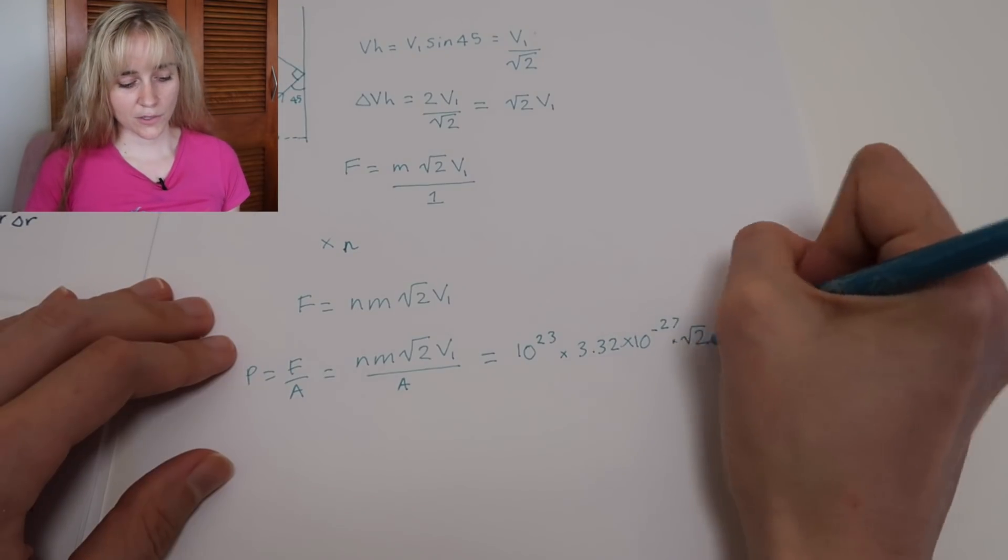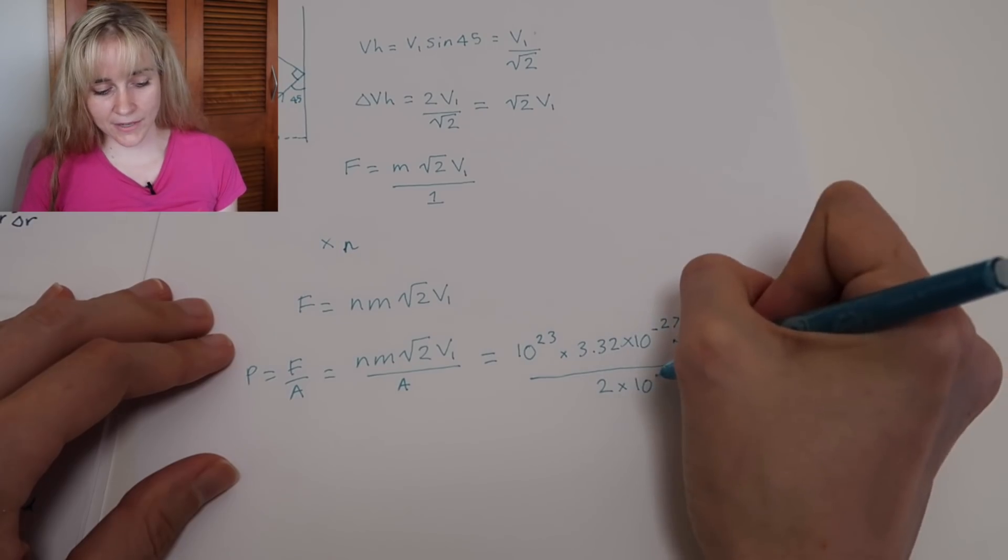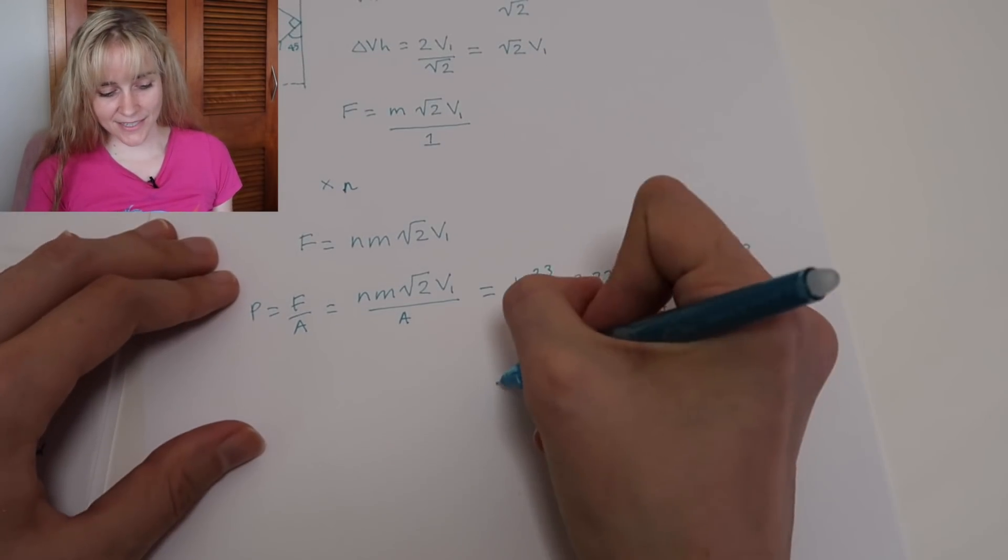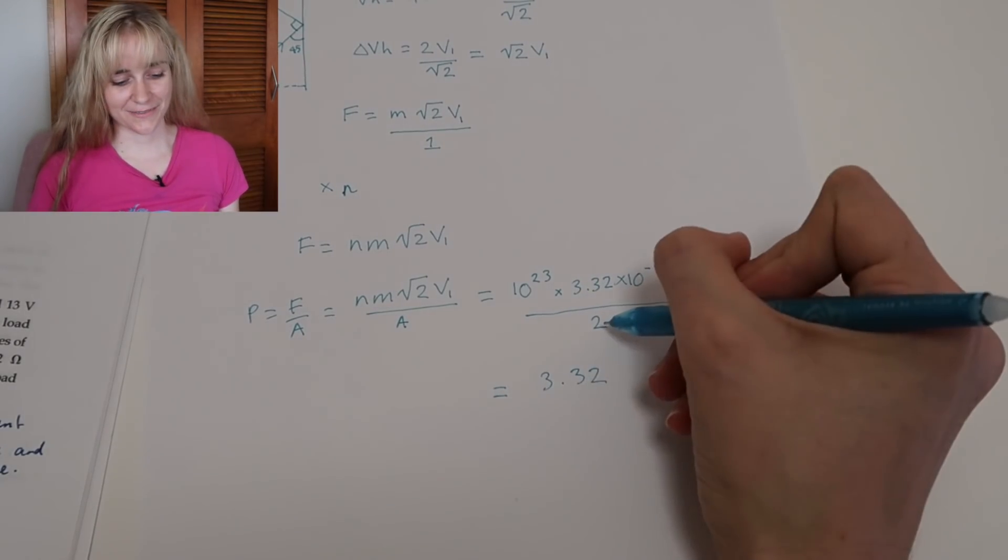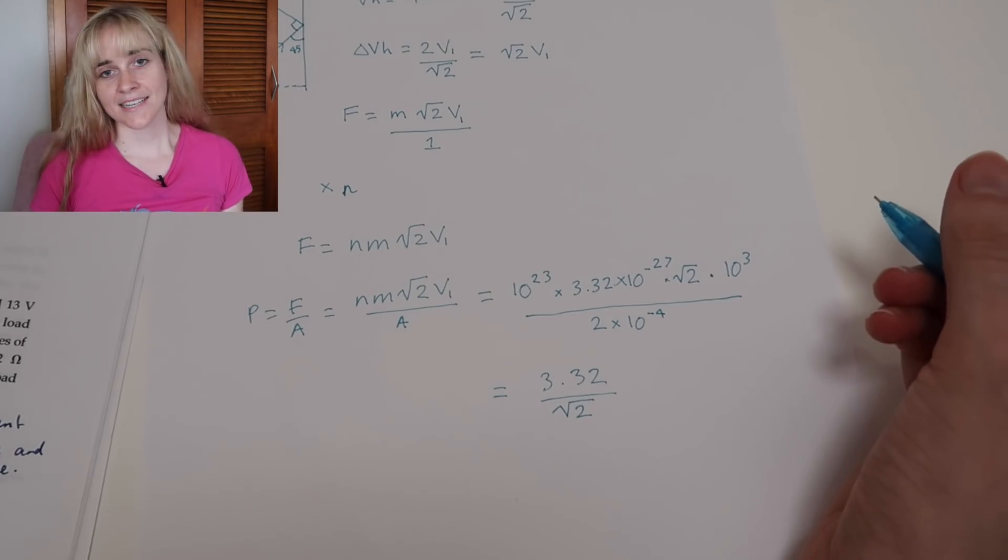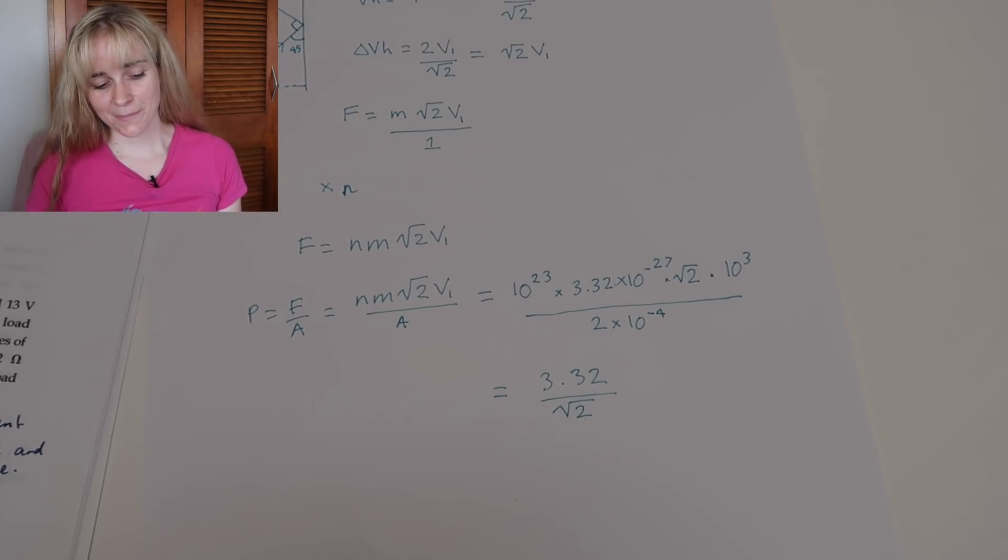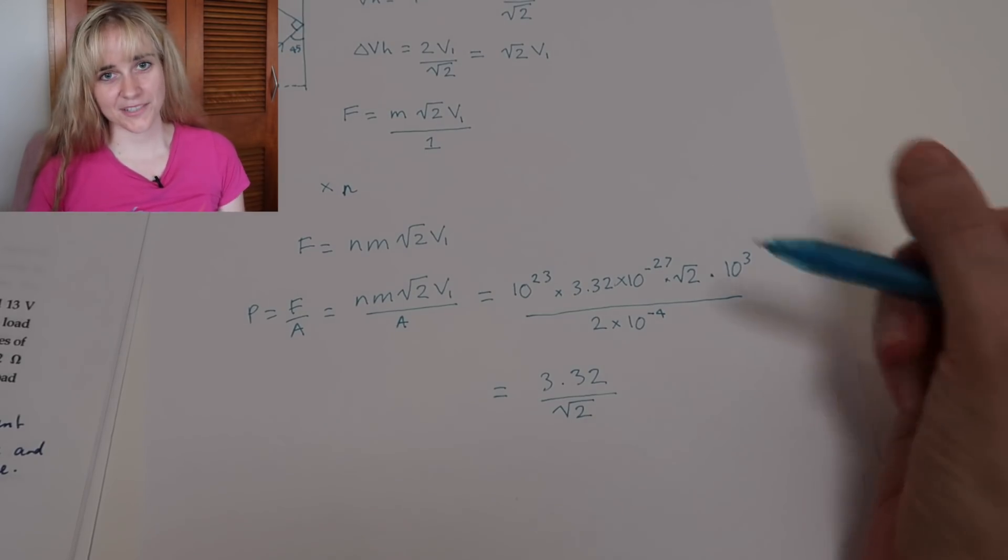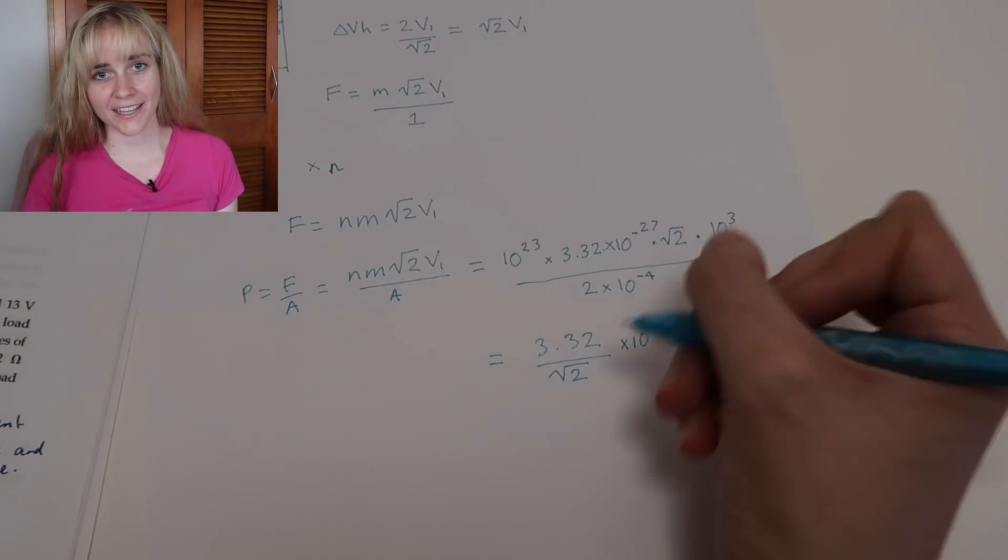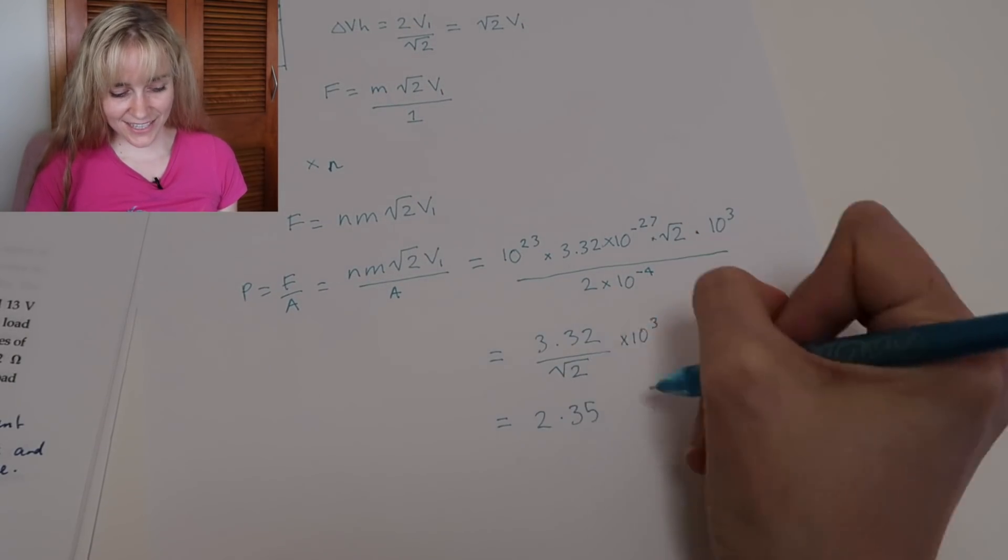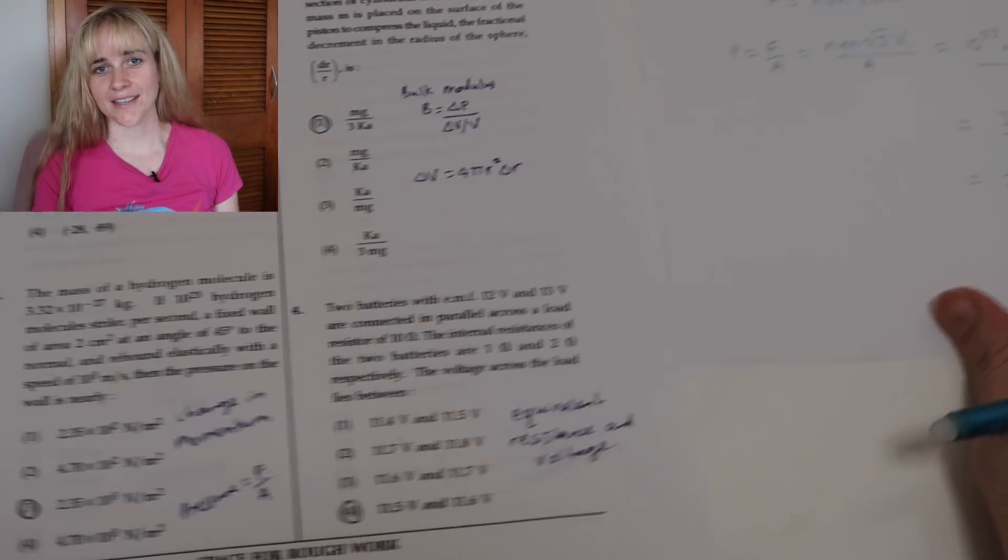Then to find the total pressure on that wall, we want to divide it by our area which was two centimeters squared. So just plug in all of our values here. Most of working this out comes to looking at our exponents. So we have a 10 to the 23, a 10 to the 3, that would be 10 to the 26. We've got a minus 27 so we'd have a total of 10 to the minus 1 on the top. We've got a 10 to the minus 4 on the bottom. Minus 1 minus negative 4, we're going to end up with 10 to the positive 3 as being the exponent on our answer. And then working out the rest of it in decimals here gives us our final answer which corresponds to option number 3 on our exam.